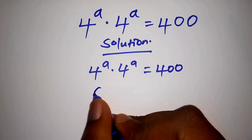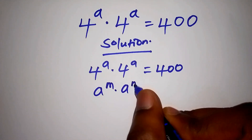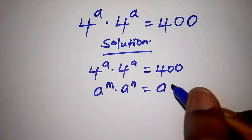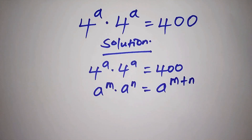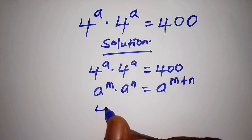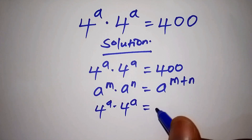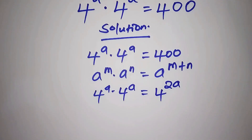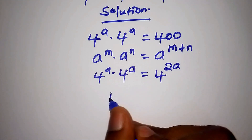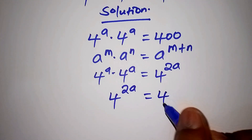Assuming that we have A to the power of M multiplied by A to the power of N, this can be written as A to the power of M plus N. That is according to the law of indices. So when you have 4 to the power of A multiplied by 4 to the power of A, it shall be 4 to the power of 2A, which is equals to 400.